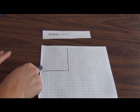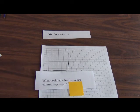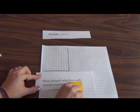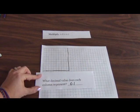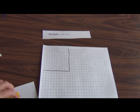I know that each column here is going to be worth 1/10 and each row is worth 1/10. I've worked with decimals enough to know that. So I can ask my question: what decimal value does each column represent? One column represents 1/10. I knew you guys knew that. Pat yourselves on the back.